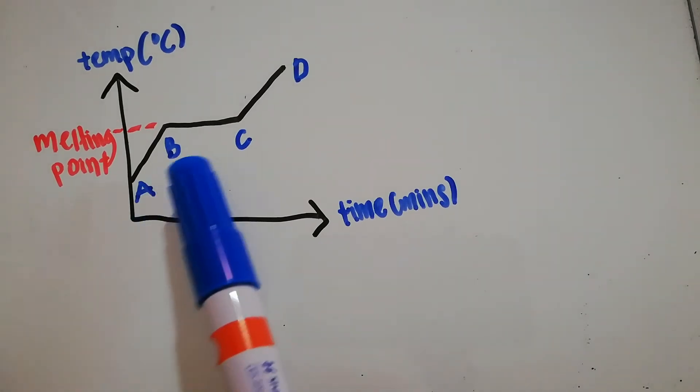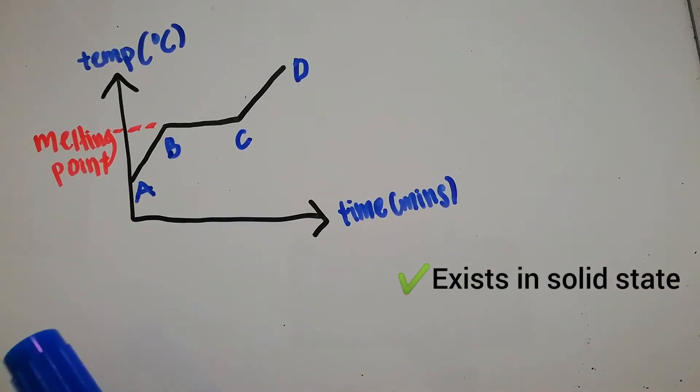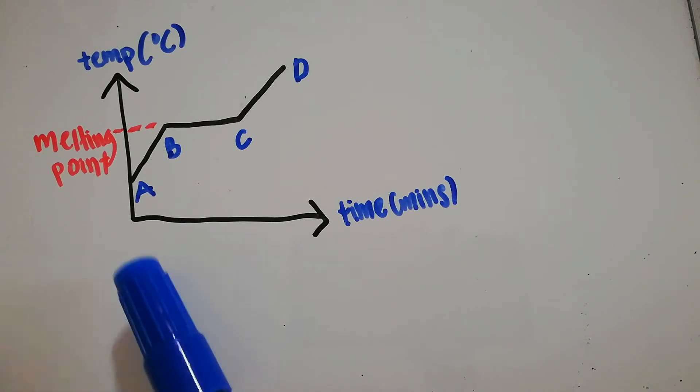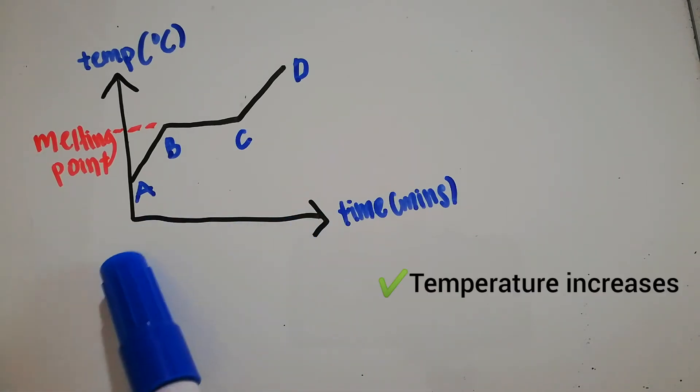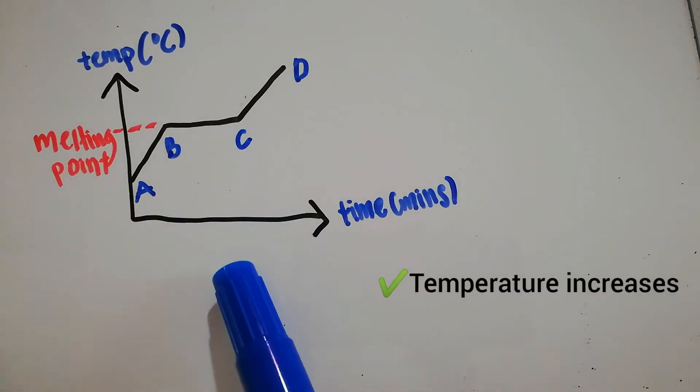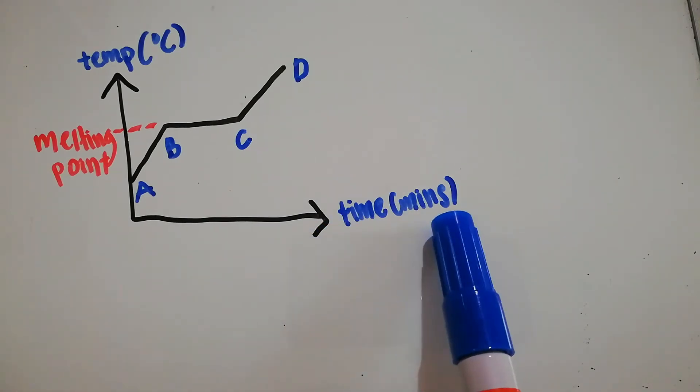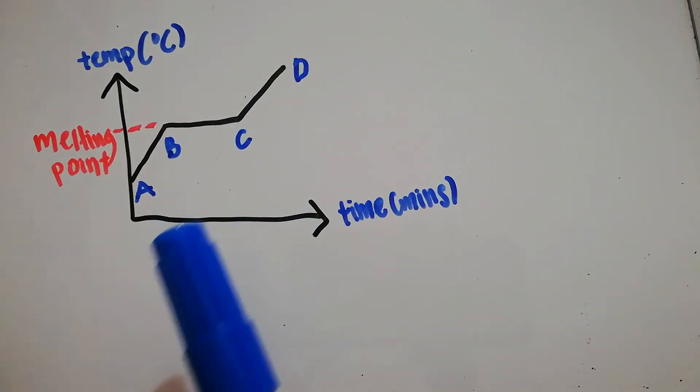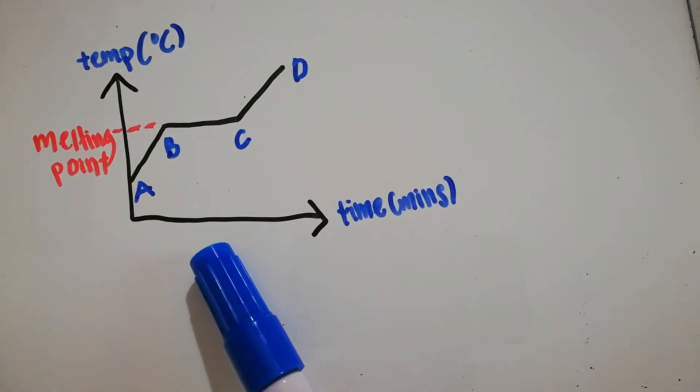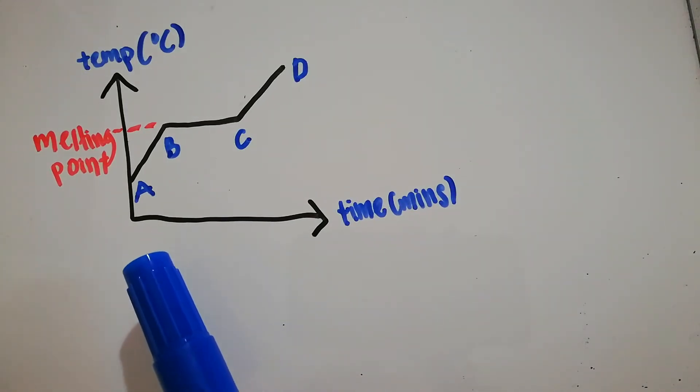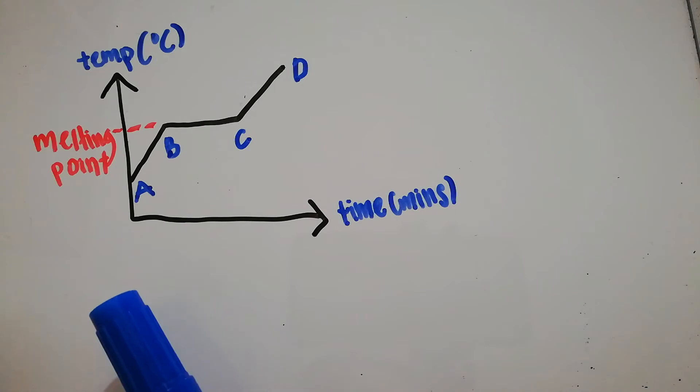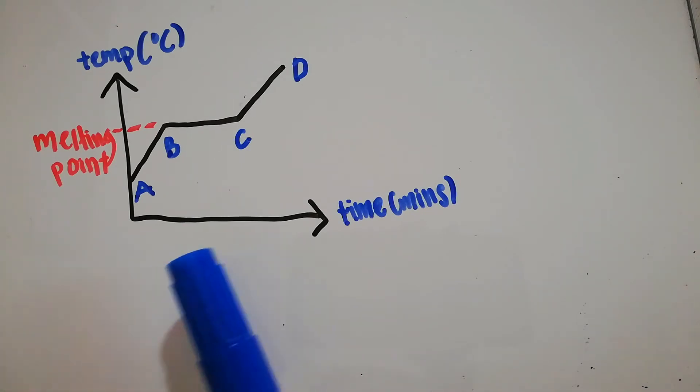From A to B, it exists in solid state. We can see the temperature increases as the time increases. When the substance is heated, the particles absorb heat energy and vibrate faster because the kinetic energy increases.